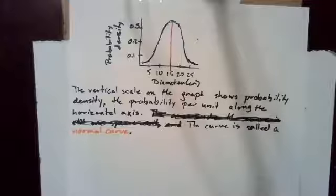And here is that bell-shaped curve. It is symmetric, even though my artistic talents do not make it exactly symmetric. It looks pretty much symmetrical. The vertical scale on the graph shows probability density, the probability per unit along the horizontal axis. The curve is called a normal curve.